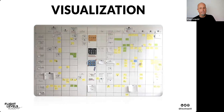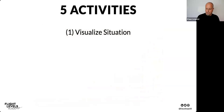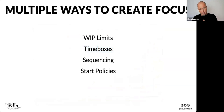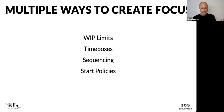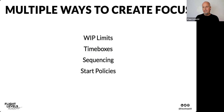Activity number two: organizations create focus. We want to shift behavior from starting work to finishing work, because starting work costs money and finishing work brings money. We want to optimize for income rather than spending. In Flight Levels land, four dominant ways of creating focus are: WIP limits, time boxes like sprints, sequencing work, and smart start policies. All shift behavior from starting to finishing work.